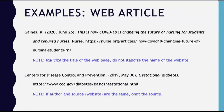Here are some examples of how to cite web articles. You will always start with the author. In the first example, the author is Kay Gaines. In parentheses, we have the date of publication. Typically, you'd like to use more than just the year — your reader should know the most recent version you were able to view and the exact date. Next is the title of the webpage in italics: 'This is how COVID-19 is changing the future of nursing for students and tenured nurses.' The name of the website, Nurse, does not have any special formatting. Then include the URL to the actual article.